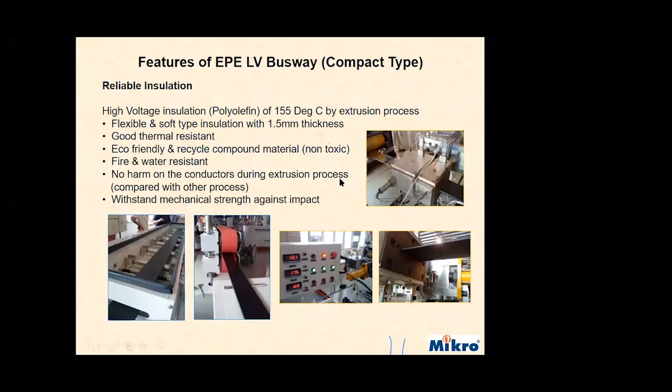This is our insulation — called polyolefin, rated at 155 degrees Celsius. The installation process is an extrusion process. Polyolefin is a flexible and soft type insulation with 1.5 mm thickness. It has good thermal resistance, is eco-friendly, non-toxic, and provides good fire and water resistance. The extrusion process means no harm on the conductors, and polyolefin can withstand mechanical strength against impact.